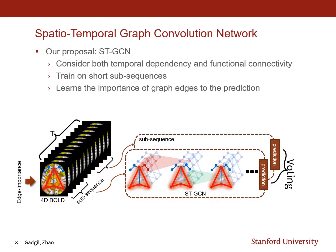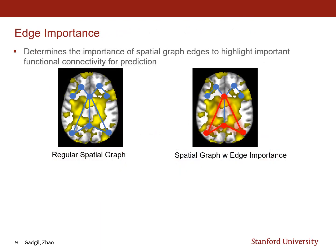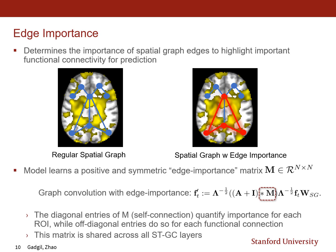In addition to prediction, the model also learns an edge importance matrix which quantifies how important each graph edge is to the prediction. This matrix allows us to highlight important functional connections in the brain. The model learns a positive and symmetric edge importance matrix M, an N by N square matrix representing the regions of interest. We add it to the graph convolution step with a learnable mask. Diagonal entries quantify each ROI's self-importance, while off-diagonal entries identify the importance of each functional connection. This matrix is shared across all STGCN layers to make it more interpretable and standardized.